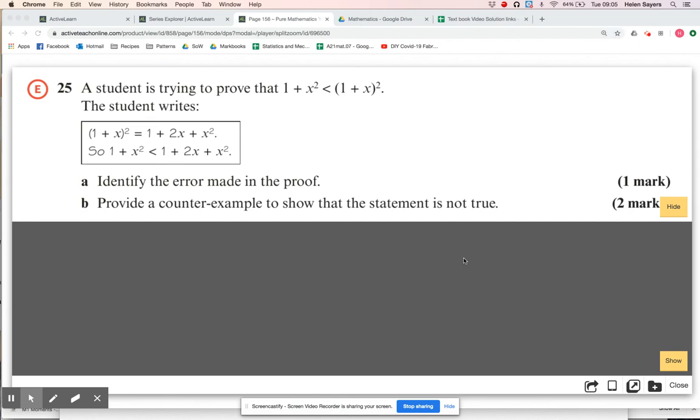We're looking at mixed exercise seven from the first year core textbook, question 25. We've got a proof here, and this type of question is coming up quite a lot - not necessarily with proofs, but where they give you some working and ask you to spot the mistake.